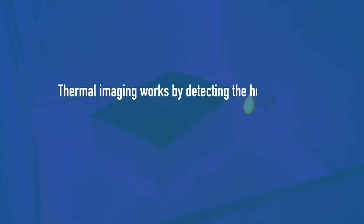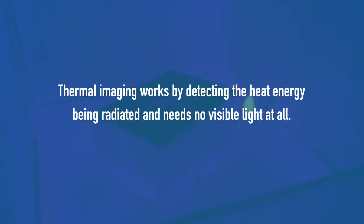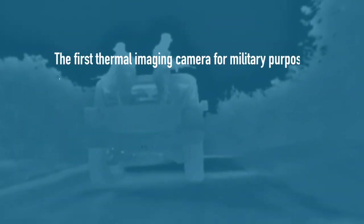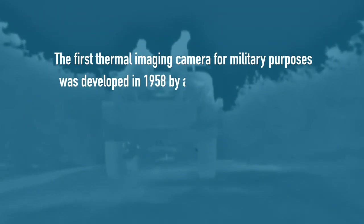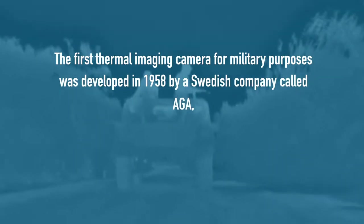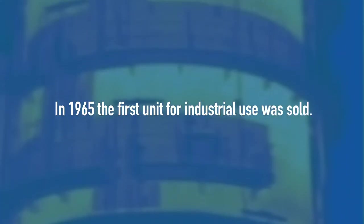Thermal imaging works by detecting the heat energy being radiated and needs no visible light at all. The first thermal imaging camera for military purposes was developed in 1958 by a Swedish company called AGA. In 1965, the first unit for industrial use was sold.